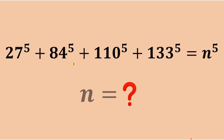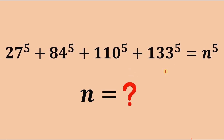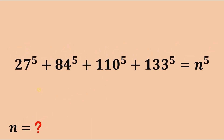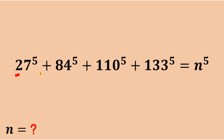What is the value of n in this equation: 27 raised to the fifth power plus 84 raised to the fifth power plus 110 raised to the fifth power plus 133 raised to the fifth power equals n raised to the fifth power? Pause the video right now and see if you can answer this question, and if you're done, put your answer in the comment section down below. Now let's see if you got the correct answer. Given this equation, our goal is to find the value of n.